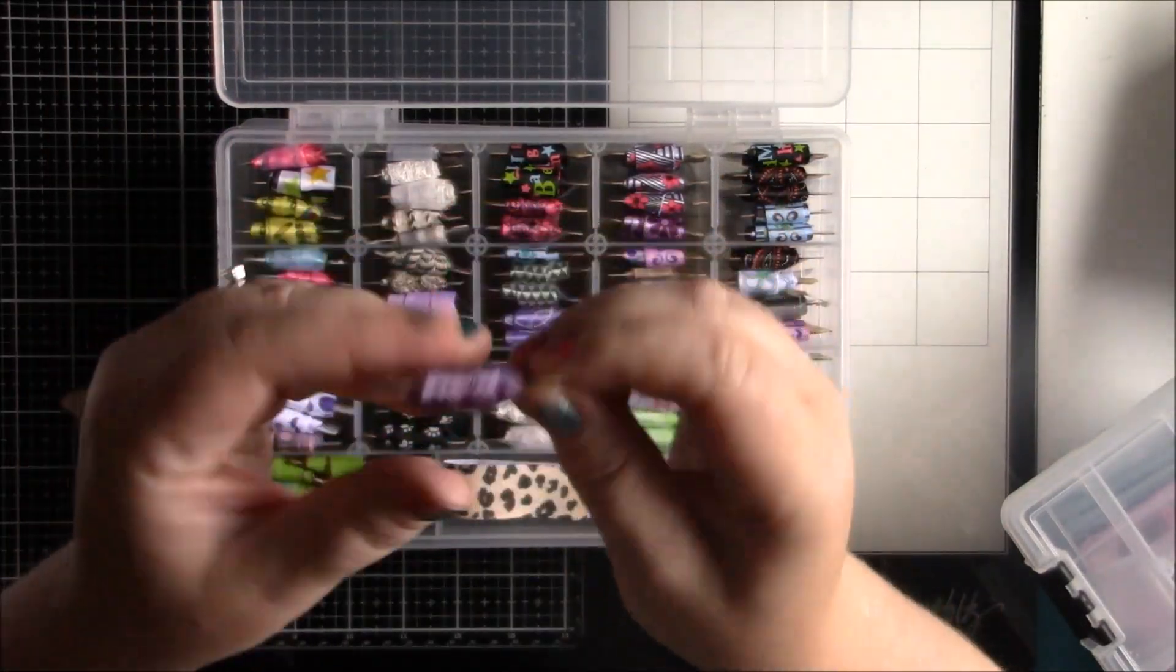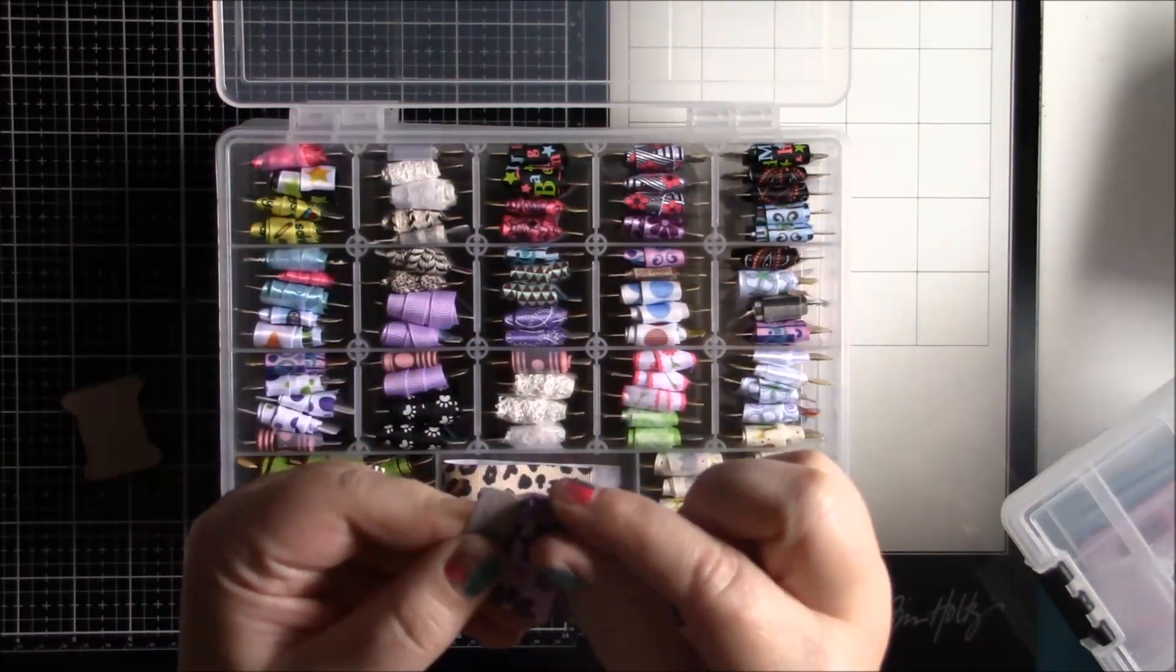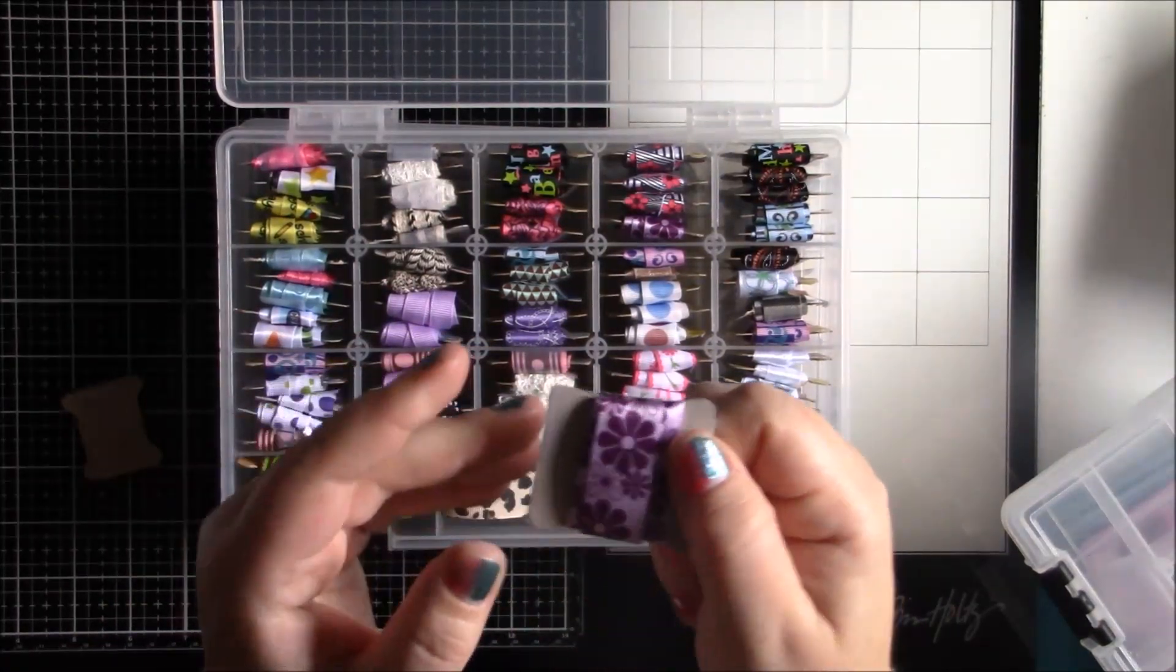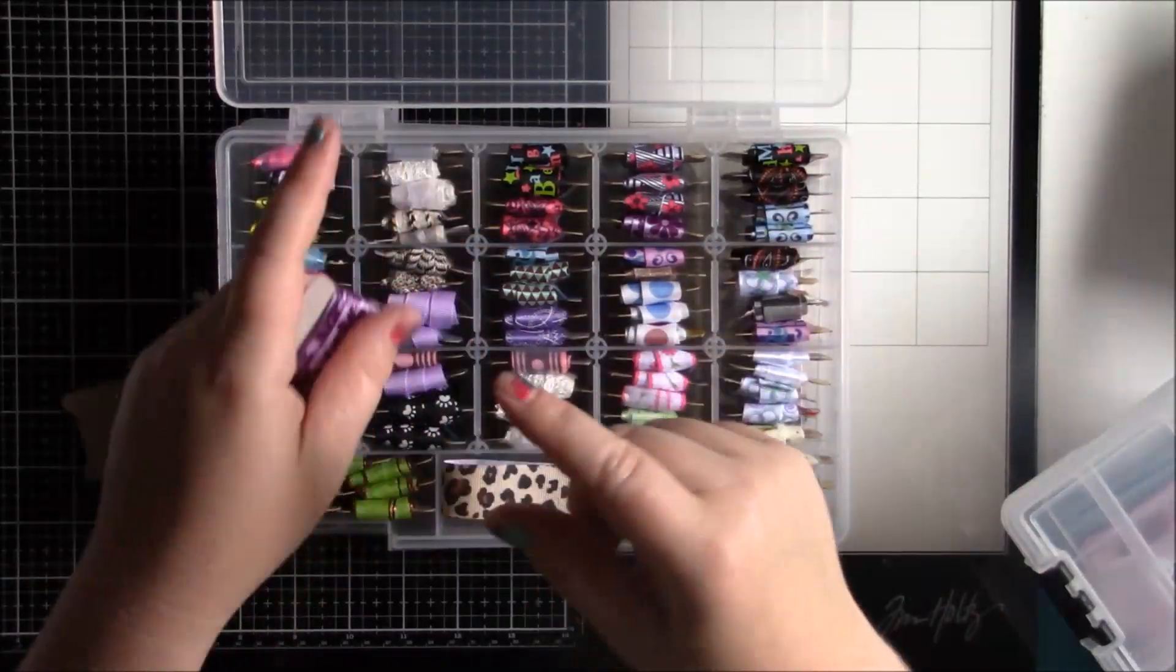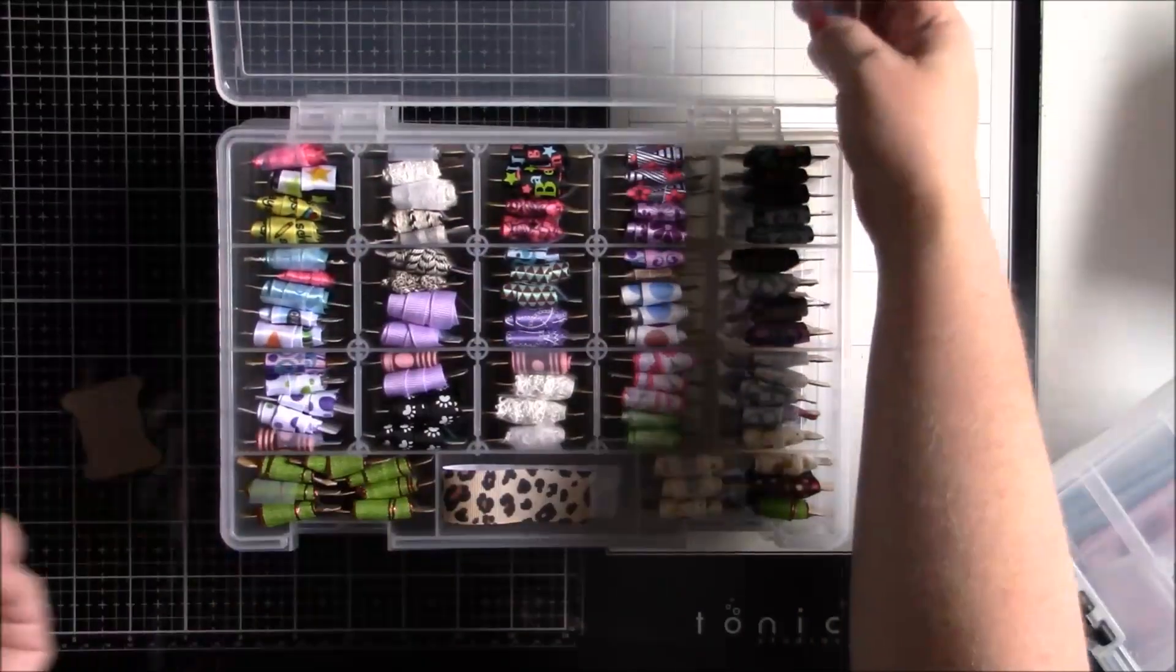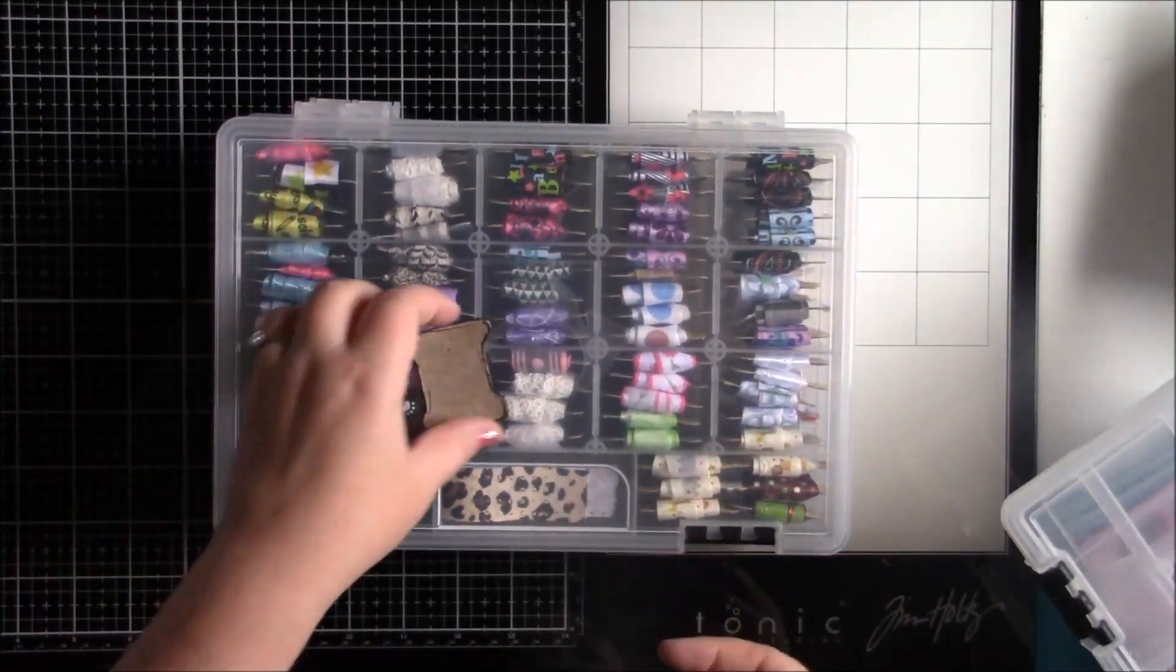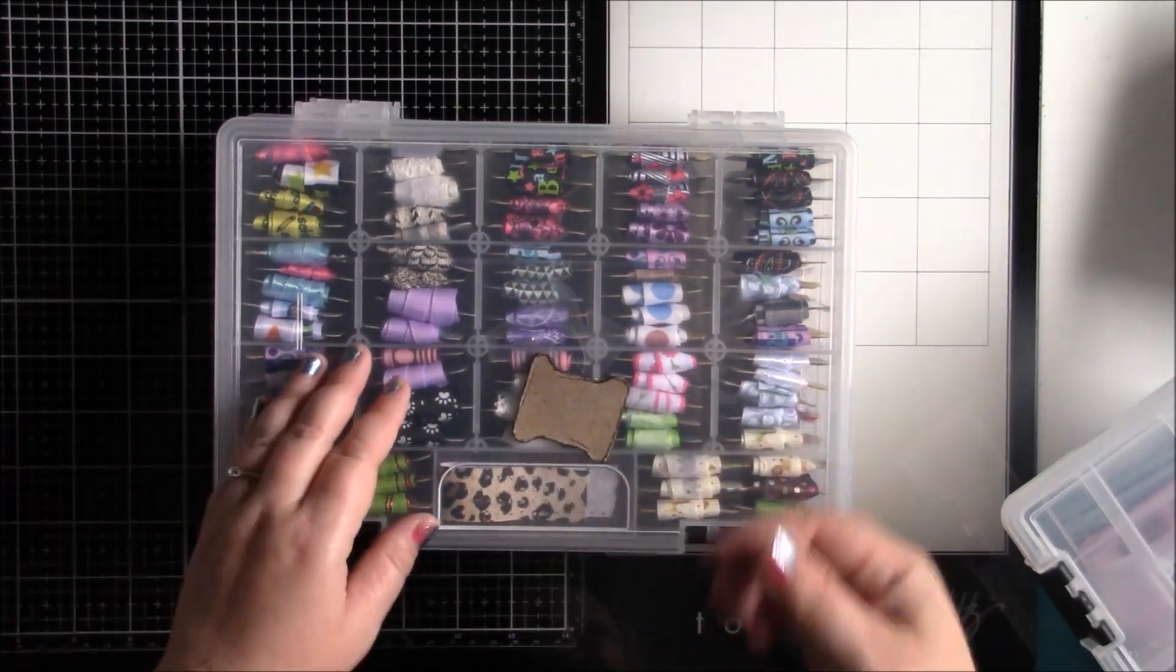And then I use tape to secure it. Now, the only downside to this is that it does put like a little divot into your ribbon, so whenever you unravel it, it might be a little bent up. But they do have ribbon irons, so if you want to, you can always do that.